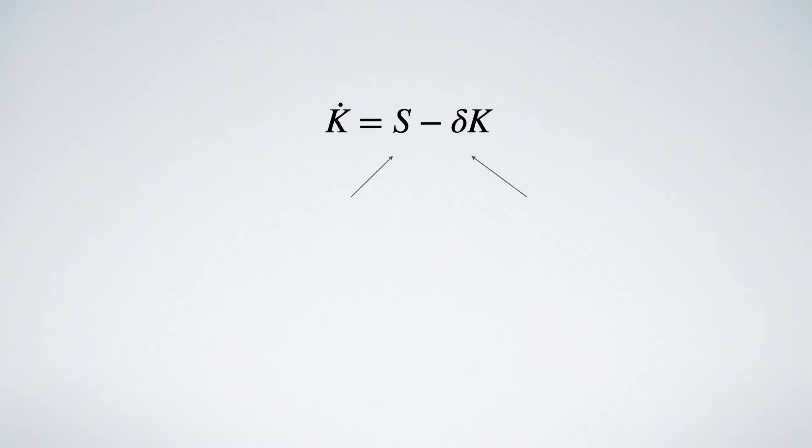Divide both sides by k to obtain the growth rate, where c is the output capital ratio. If c is constant, output also grows at the same rate.